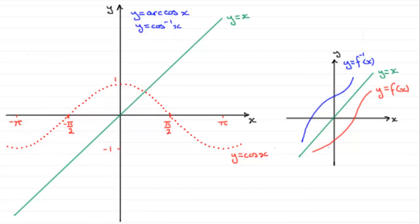And if we do this, we get something looking like this. The graph then of y equals arc cos x.